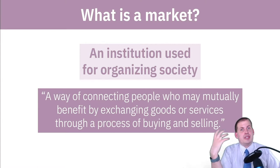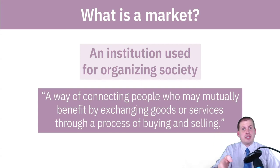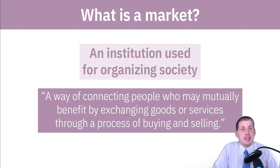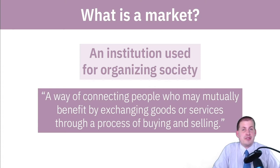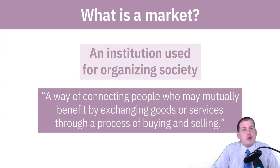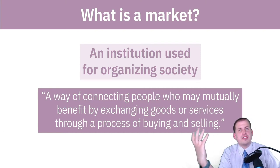Markets coordinate behavior in a way that lets people expand their production possibility frontier — they can create more stuff and buy more stuff by trading and specializing. This goes back to session two where we talked about comparative and absolute advantage: if you have comparative advantage you can gain from trade even if you don't have absolute advantage. That's because of market institutions that enable those kinds of gains in society.